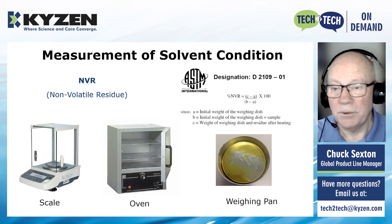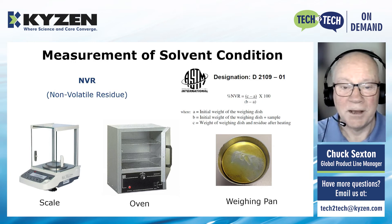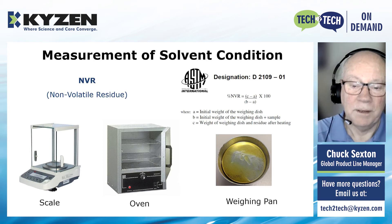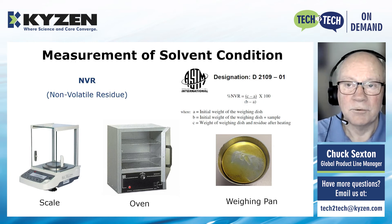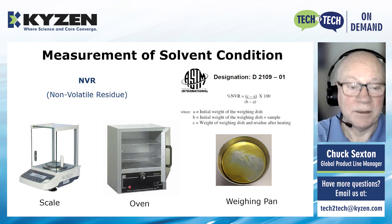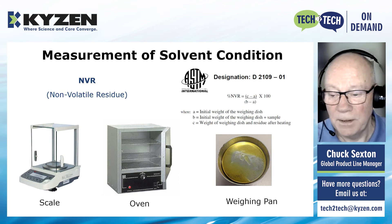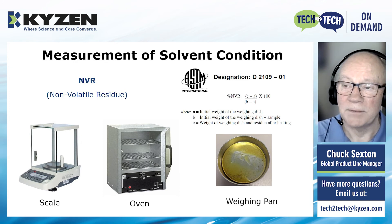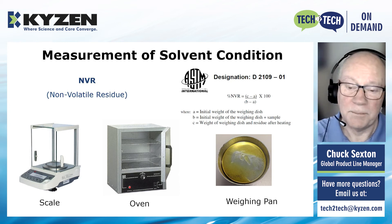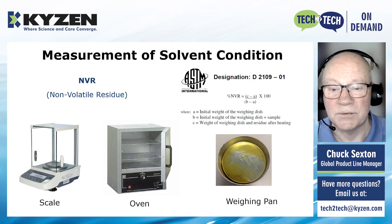I mentioned earlier that we do NVR — non-volatile residue — for both aqueous and for solvents. This is the tried and true ASTM method. It uses a laboratory scale and an oven where we measure the weight of the contaminant, drive off the volatile portion, and then weigh what's left — calculating the non-volatile residue. This is a really good measure of solvent condition and how close you are to end of bath. It works about 80% of the time; sometimes you reach steady state where concentration levels out but you're still cleaning.